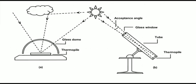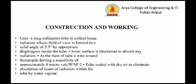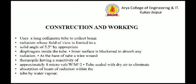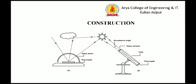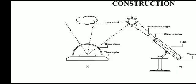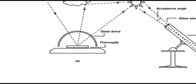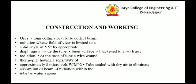The radiation's field of view is limited to a solid angle of approximately 5.5 degrees, called the acceptance angle. A diaphragm inside the tube has its inner surface painted black to absorb stray radiation. A glass window is placed at the base of the tube. A wire-wound thermopile with a sensitivity of approximately 8 microvolt per watt per meter squared is located at the base of the tube. The tube is sealed with dry air to eliminate absorption of beam radiation by water vapor.